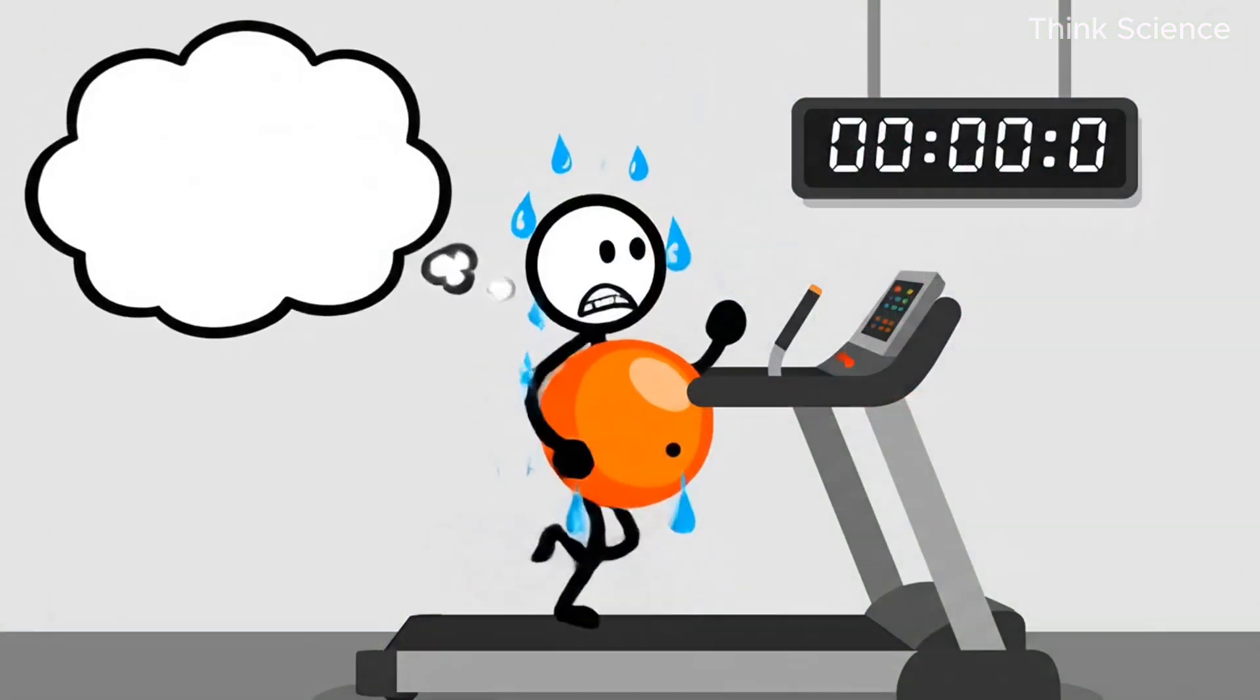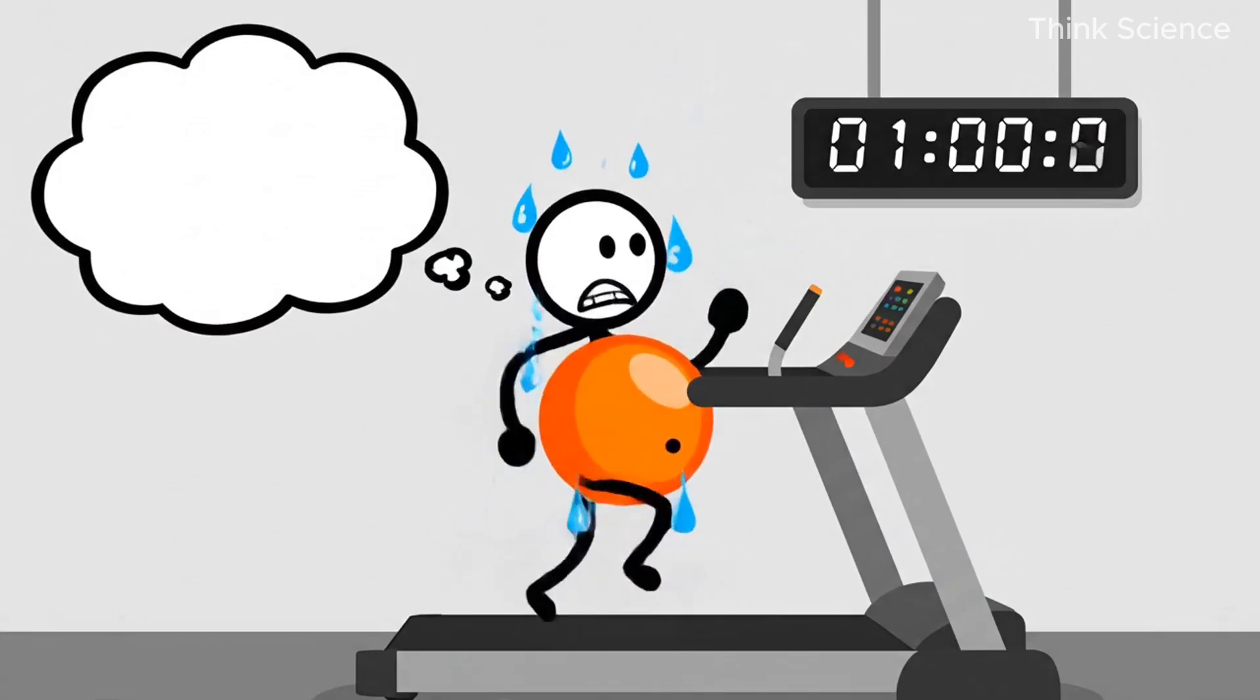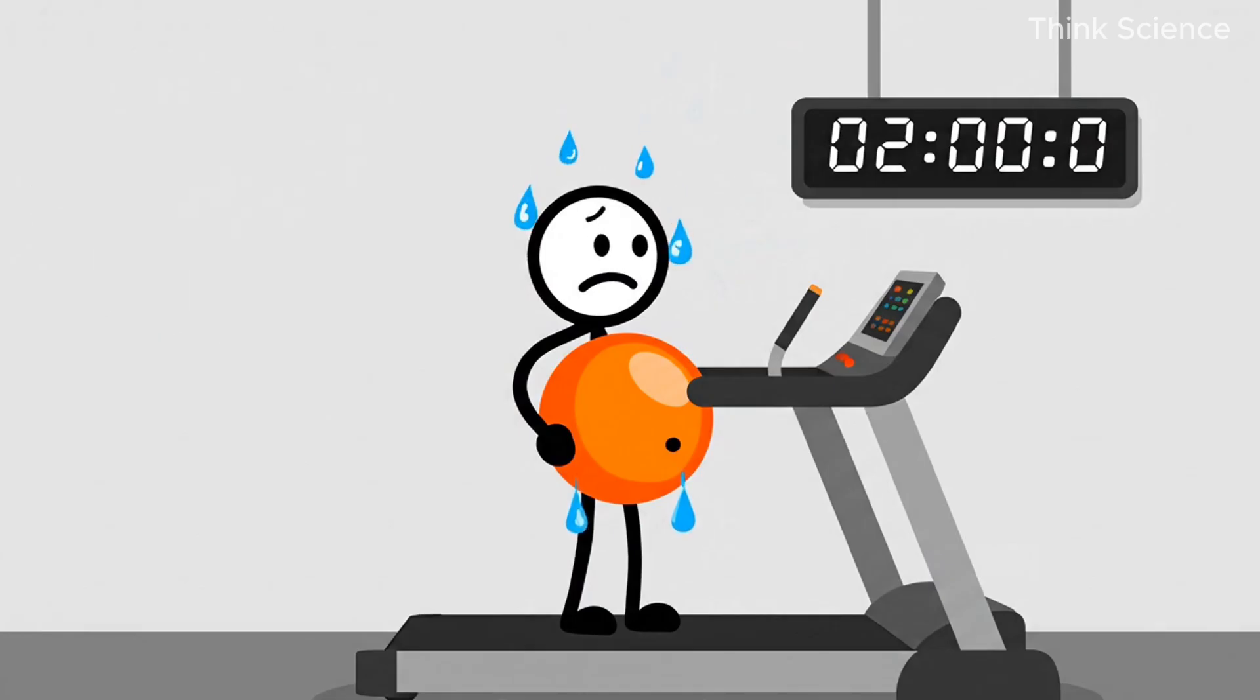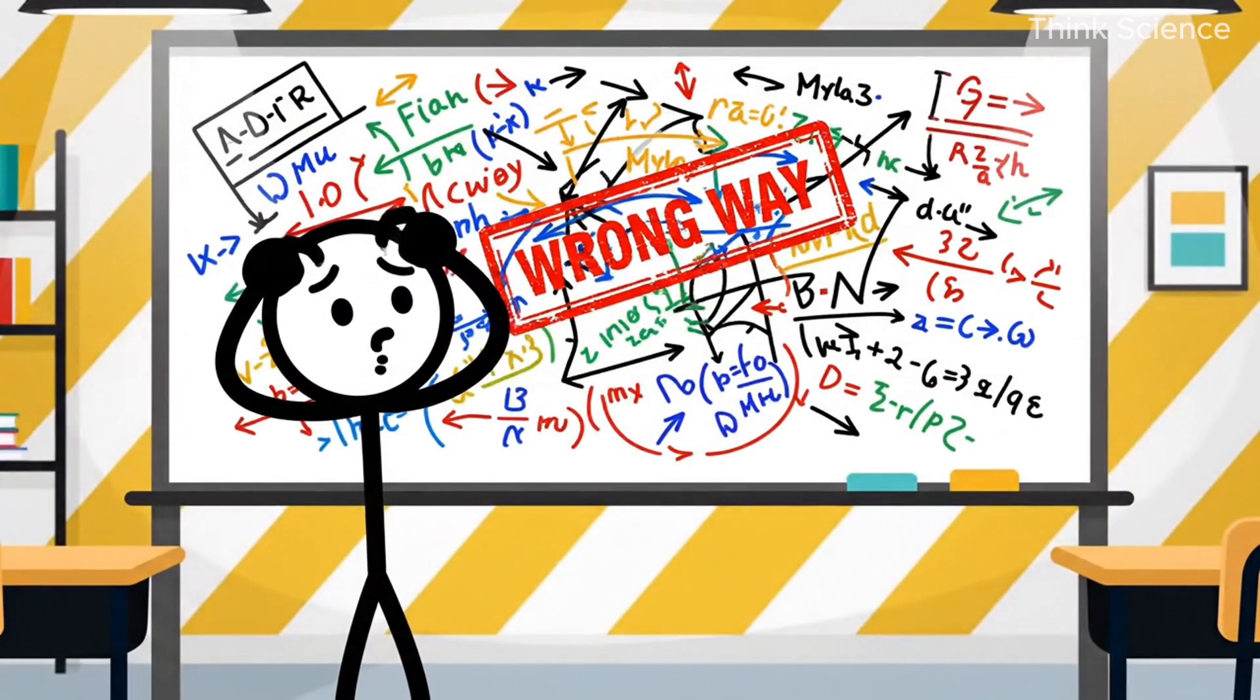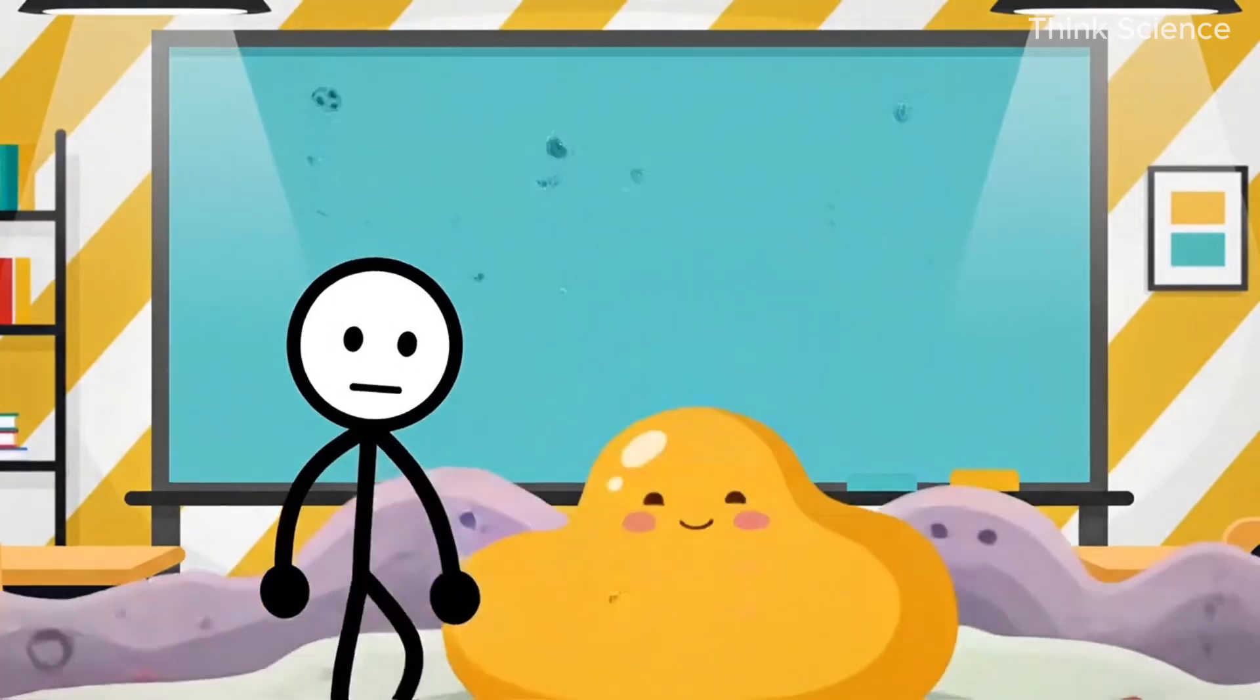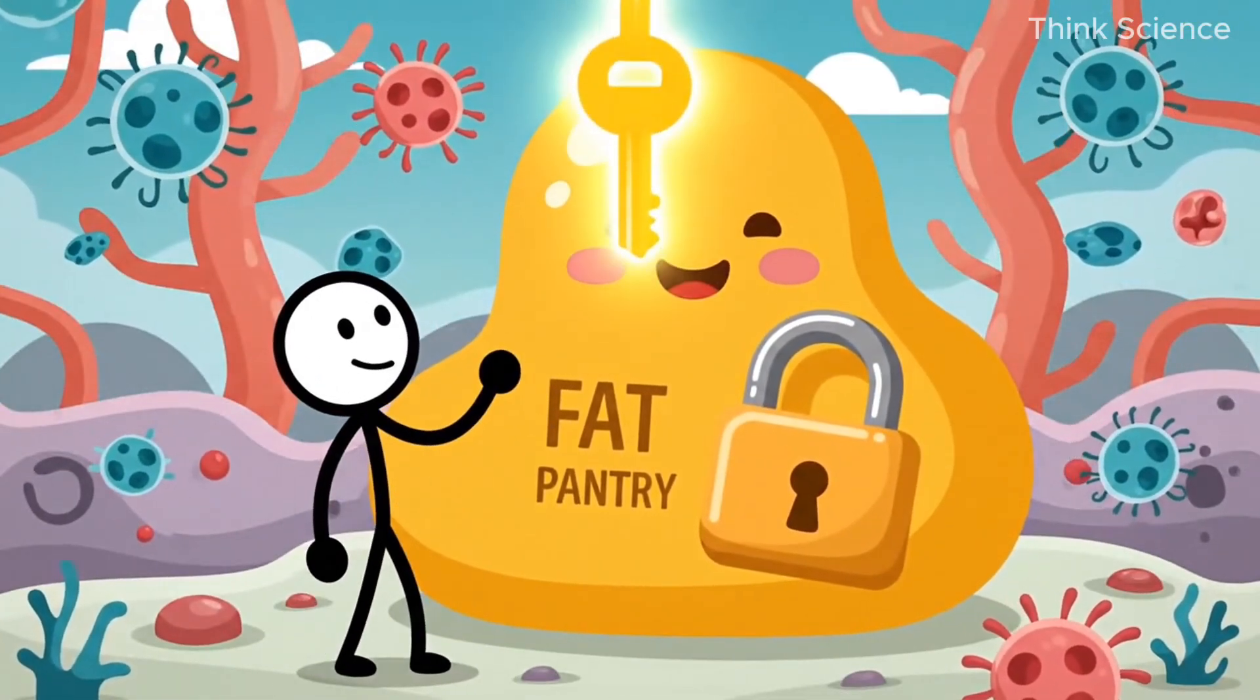But to understand that final step, we need to start with what actually happens when your body tries to burn fat. Because most people have this part completely backwards. Think of fat like a locked pantry of fuel. To use that fuel, you need three things.